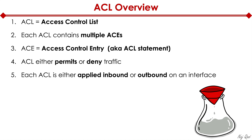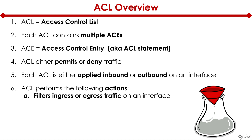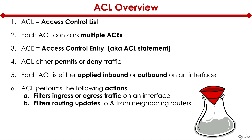Each ACL is either applied inbound or outbound on an interface. ACLs actually do a lot more than permit or deny. They filter ingress or egress traffic on an interface, and they filter routing updates to and from neighboring routers.